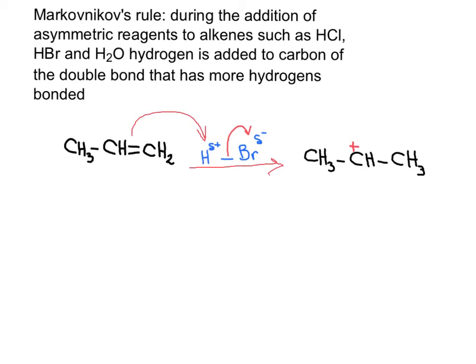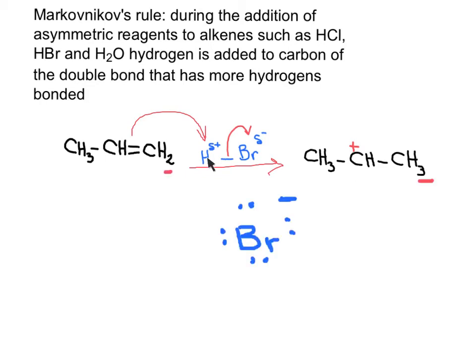Detailed studies show that alkene addition reactions take place in two distinct steps. In the first step, the electrons from the carbon-carbon double bond are added to the proton from the reagent. Now this central carbon is lacking two electrons — it needs more electrons to fulfill an octet. A carbon that is lacking electrons or bonds and carries a positive charge is called a carbocation.